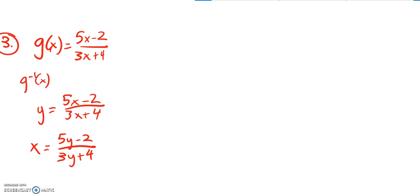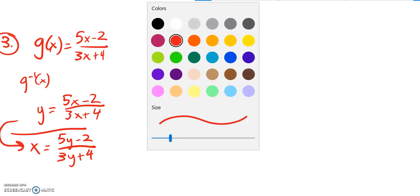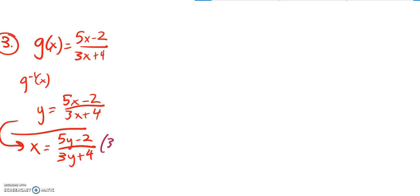Alright, and then now I'm just going to solve for y. So I've actually, now that is the inverse. I'm just going to solve it so that y is all alone. So the first thing I notice is I don't like this thing in the denominator, so I'm going to multiply both sides by that denominator.